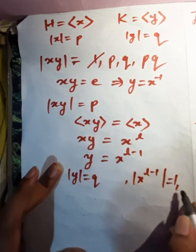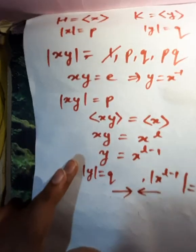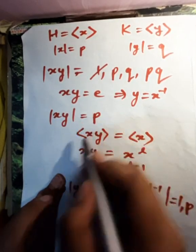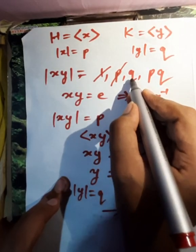Again, a contradiction. So order of xy cannot be p. So this case is ruled out. Now we look at the third case.